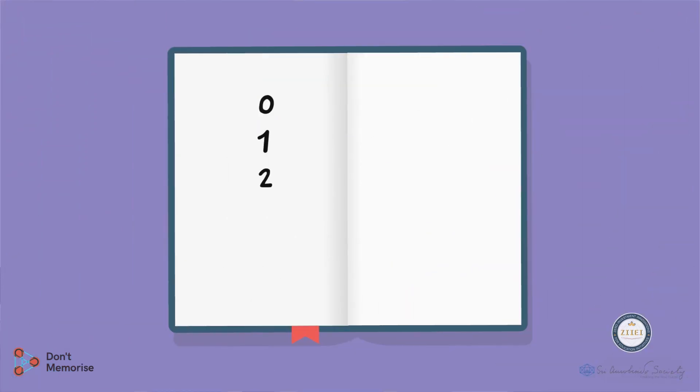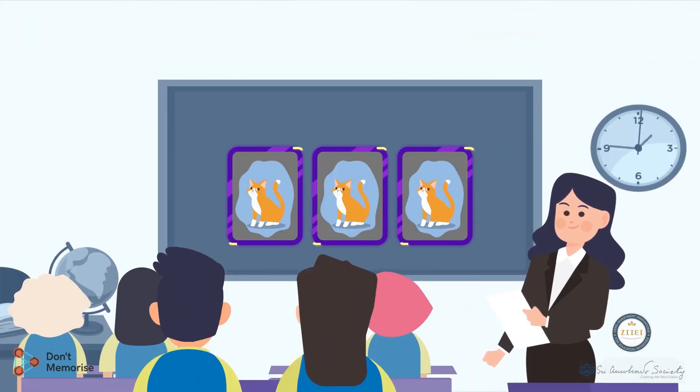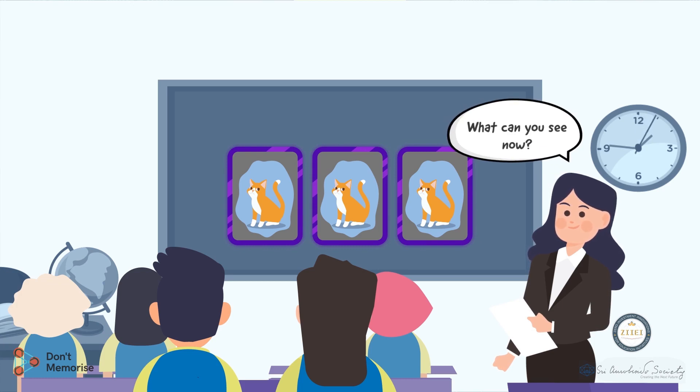Now let's continue building the story by displaying the three picture cards of the kittens. Ask the students what can they see. They may respond by saying, kittens.